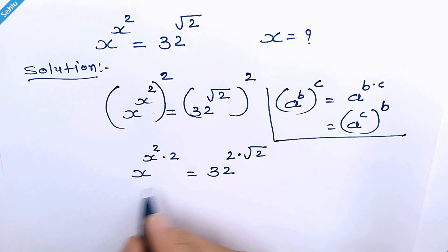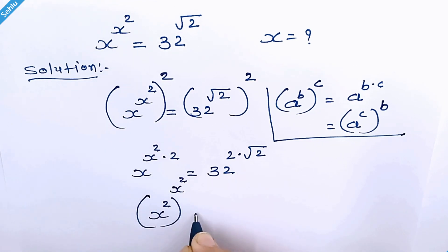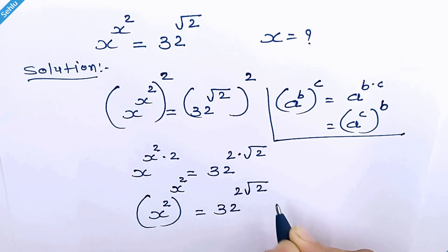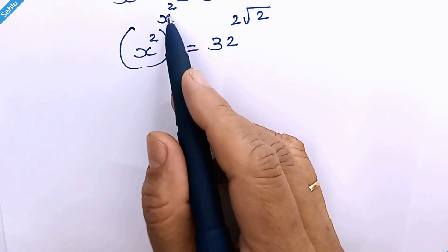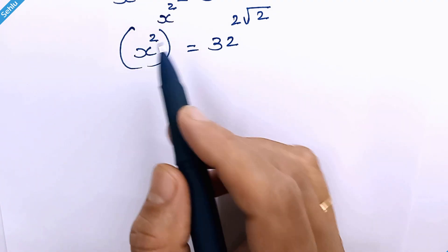This can be rewritten as x square, whole raised to x square, is equal to 32 raised to 2 times square root of 2. On the left hand side, we now have the base and exponent both the same.